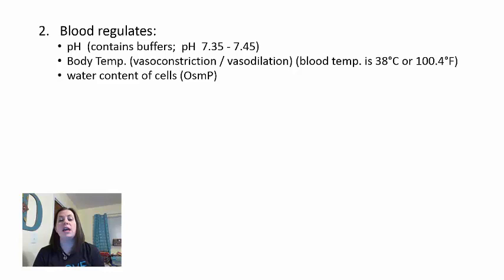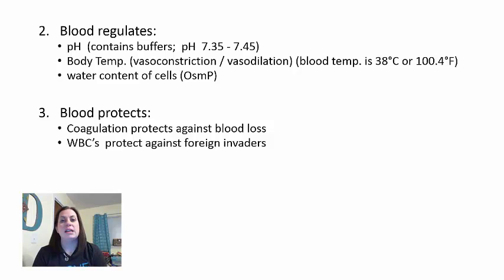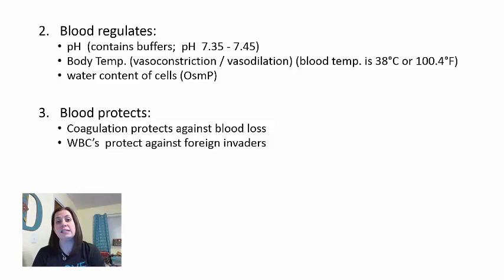The third function of blood is protection. First, coagulation protects against blood loss: if a blood vessel is ruptured, cut, or damaged, platelets help stop the bleeding, keeping blood where it's supposed to be. Second, white blood cells found in the blood protect against foreign invaders, and they also migrate into the lymphatic system, which we'll discuss in chapter 22.